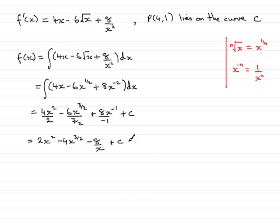Now, to find out fully what f of x is, we've got to work out what the constant of integration is, c. Now, we know that P lies on the curve C, so we know that when x is 4, f of 4 would be 1. So I can say then that given that f of 4, that's when x is 4, we get 1. So if I substitute x is 4 into this equation here, we would have 2 times 4 squared minus 4 to the power 3 over 2, minus 8 over 4, plus c, should equal 1.